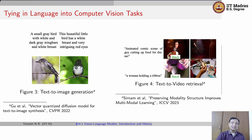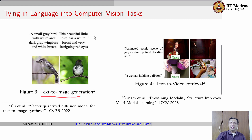More recently, there have been more such tasks addressed. An example is text-to-image generation. Thanks to the success of more contemporary generative models, we now have fairly good text-to-image generation, or even text-to-video retrieval, that has emerged in the last year or so.